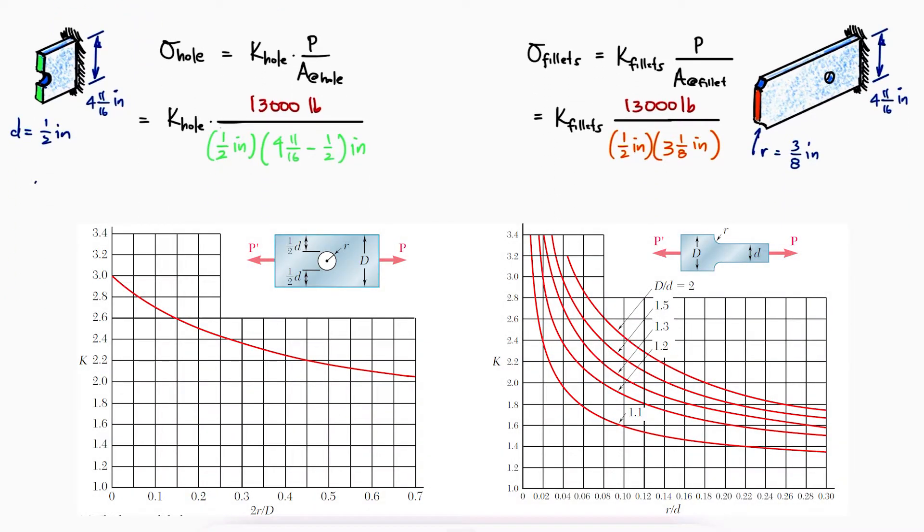The diameter of the hole over the larger width gives us an x-axis value of 0.16 repeating. The corresponding stress concentration factor K would be slightly below 2.7.